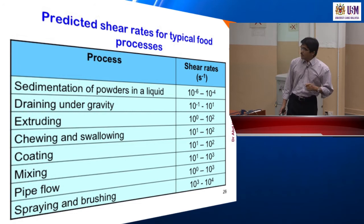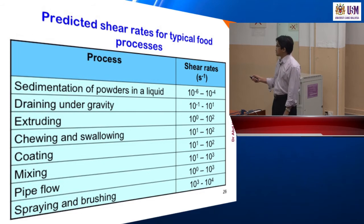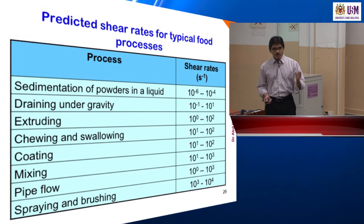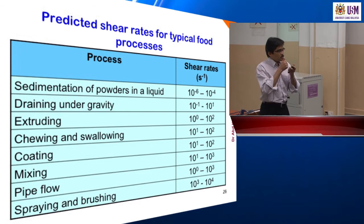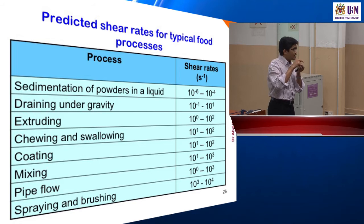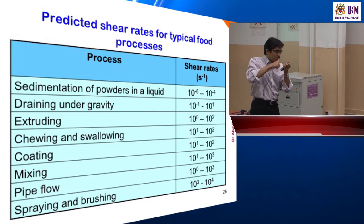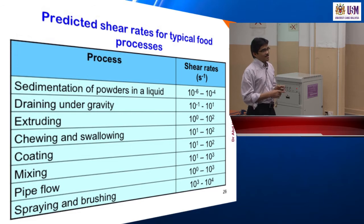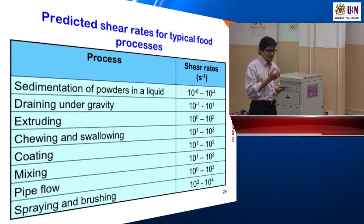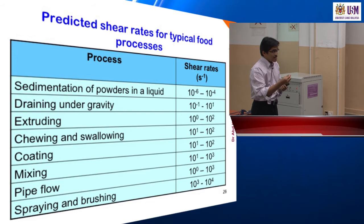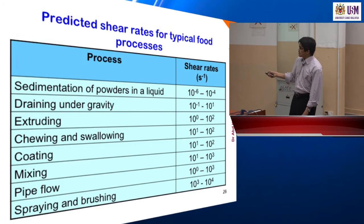Draining under gravity has a shear rate of 10⁻¹ to 100 s⁻¹. Extruding — when we force something through an opening, like making kuih senpere or dispensing McDonald's ice cream — has a shear rate of about 1 to 100 s⁻¹. Chewing and swallowing — when you eat something like chewing gum and swallow, the food is squeezed through a small channel into our stomach — so it is also subjected to shear rate.